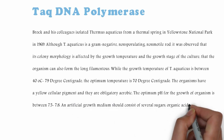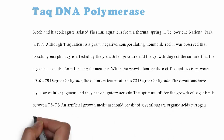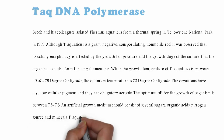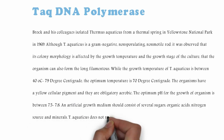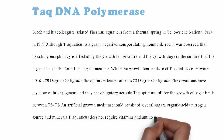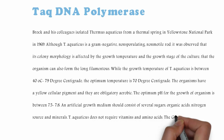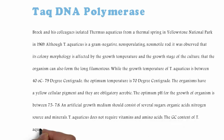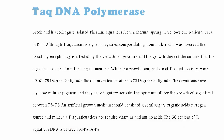The optimum pH for the growth of the organism is between 7.5 to 7.8. An artificial growth medium should consist of several sugars, organic acids, nitrogen source, and minerals. Thermus aquaticus does not require vitamins and amino acids. The GC content of Thermus aquaticus DNA is between 65.4% to 67.4%.